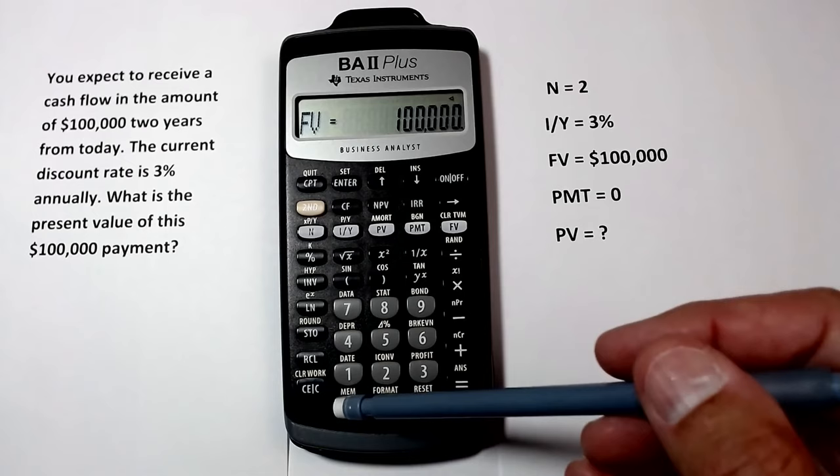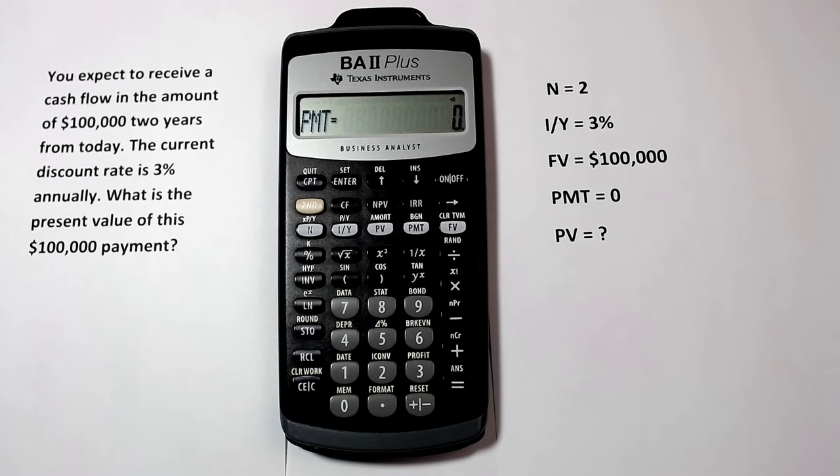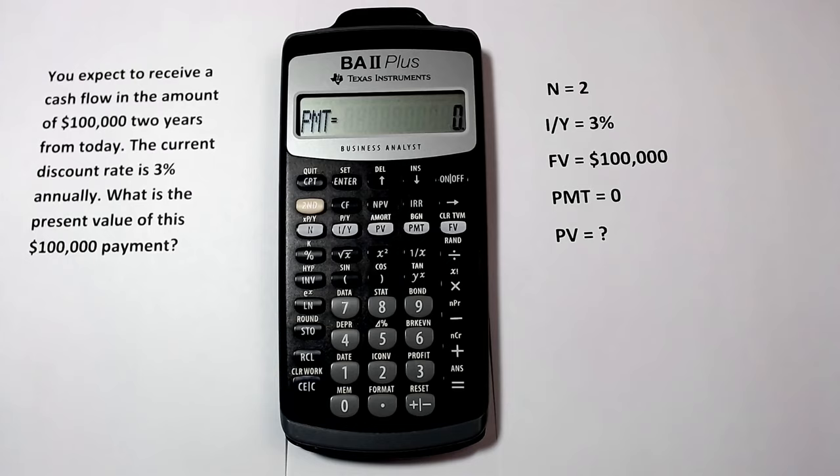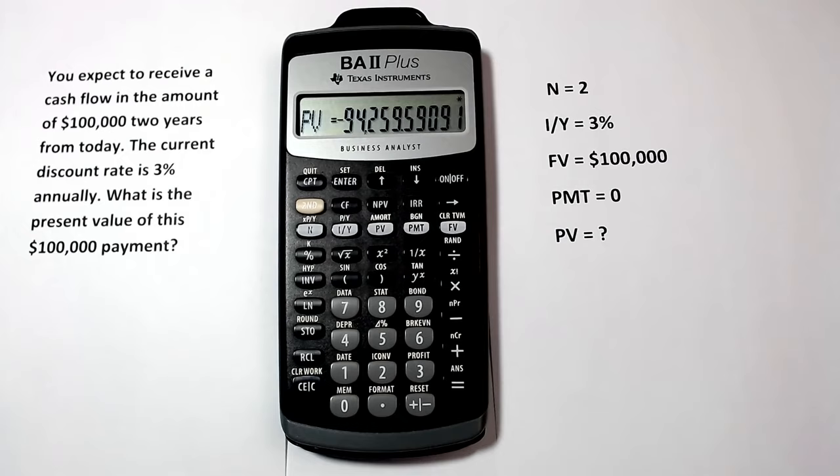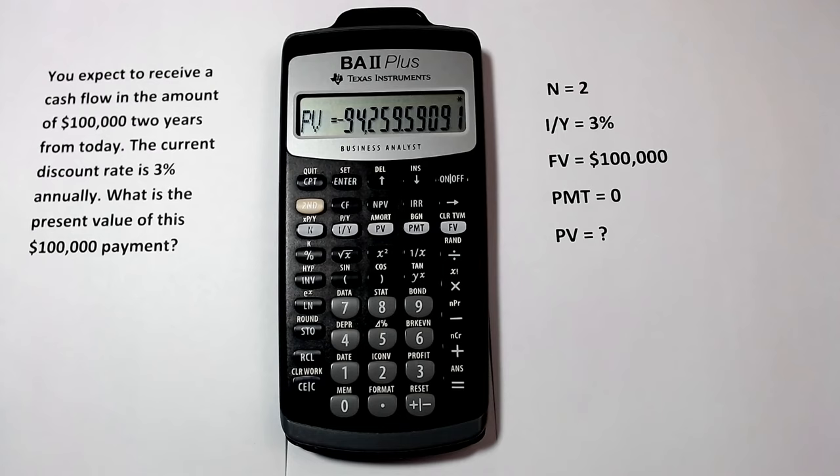Now we want to know what the present value is. So we press CPT for compute, then PV for present value. And here we see that the present value of a $100,000 cash flow two years from today discounted to present with a discount rate of 3% is $94,259.59. This value is represented as a negative number by convention.